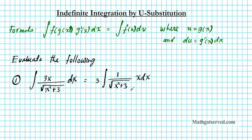Now we're going to do a test to see if we can use substitution here. We take the inner function and differentiate it to see if we get a multiple of the other function. Taking the inner function x squared plus 3 and differentiating gives us 2x. Is this a multiple of x? Absolutely. So this is a good problem for u-substitution.